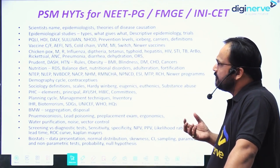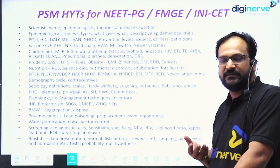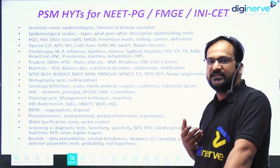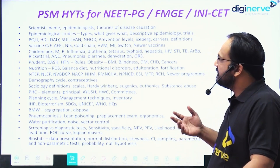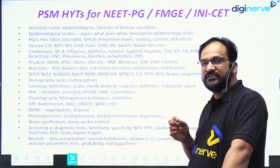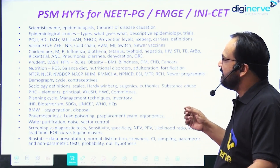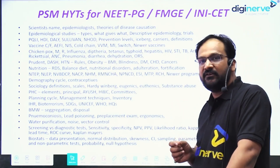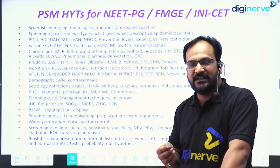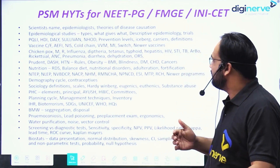You must know about epidemiological studies, because many times there are questions about epidemiological history — like which study is responsible for prevalence or which is for incidence. In descriptive epidemiology, you must know what the clinical trials are, what the phases of clinical trials are, then PQLI, HDI, DALY, Sullivan index, and natural history of disease. For levels of prevention, there will be no direct question but they give you a case scenario and ask which level of prevention applies.